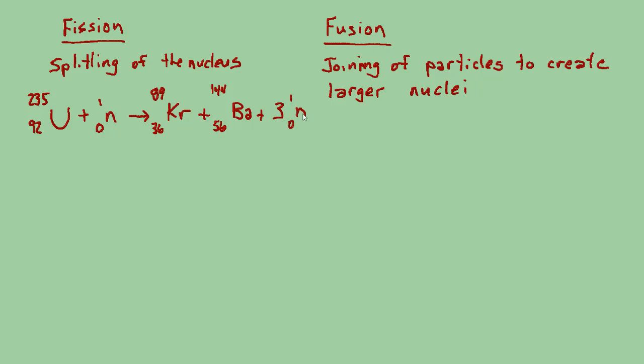One of the things that I think is important to see is that this balances. You've got 92 protons on this side and a total between the 36 and 56 of 92 on the right-hand side. Up top you have 236 total nuclei, 235 plus 1. And your 89 plus 144 plus 3 times 1 is also 236. This is one of the most famous ways this can go down.